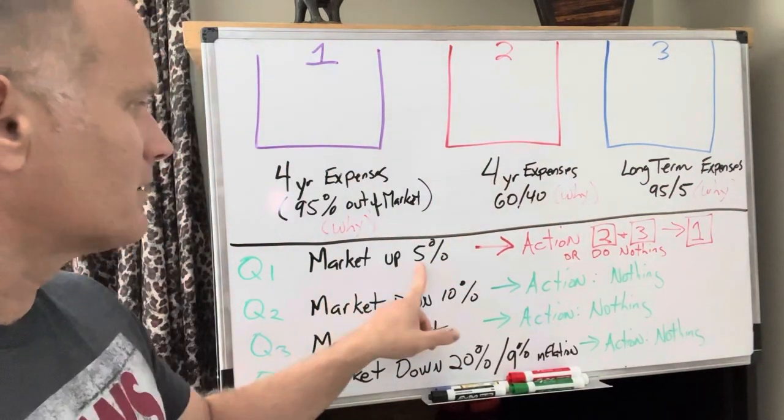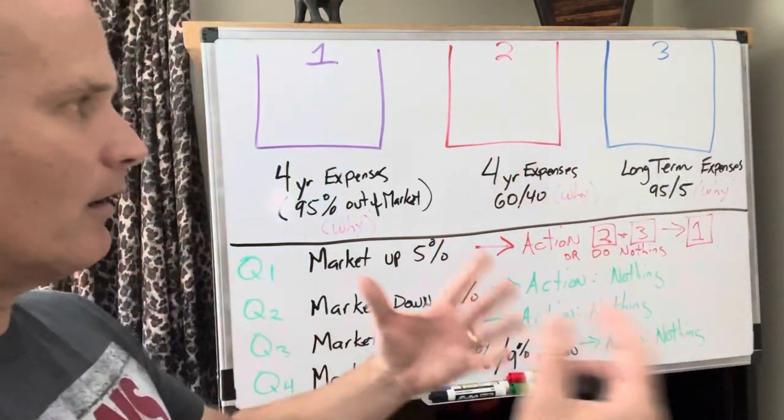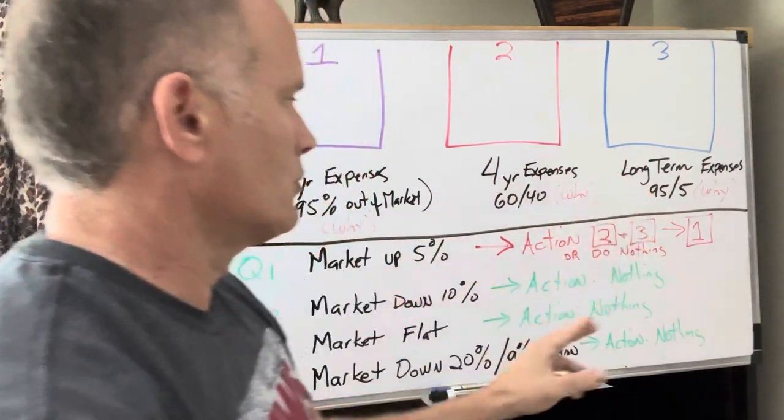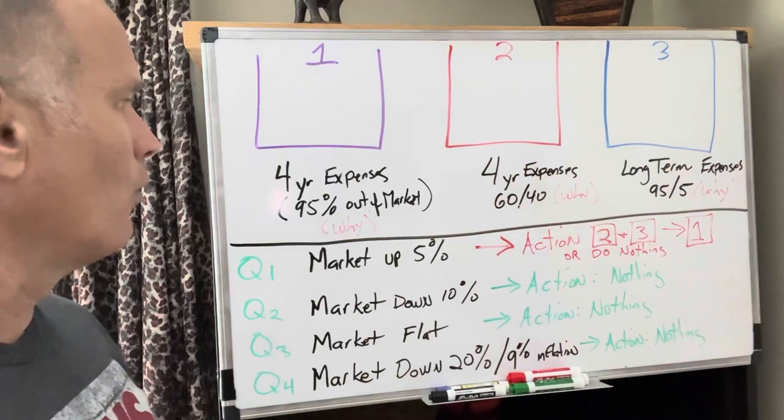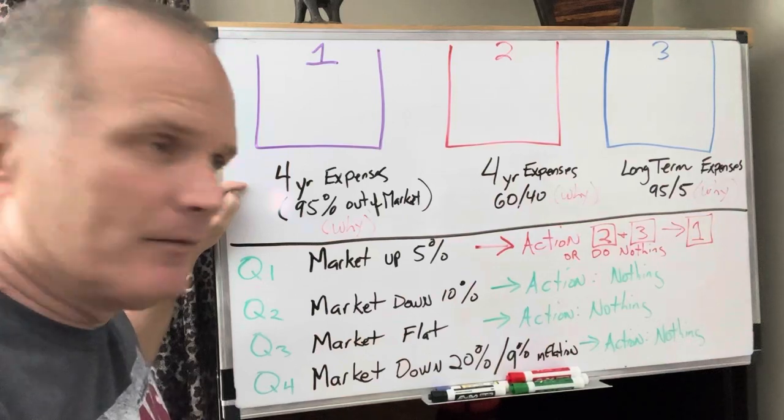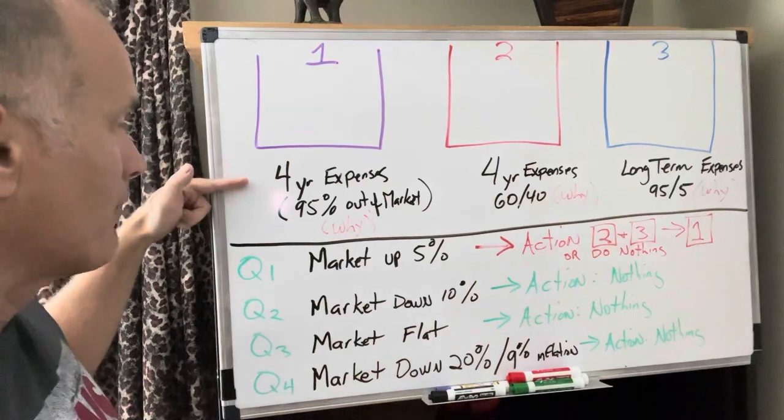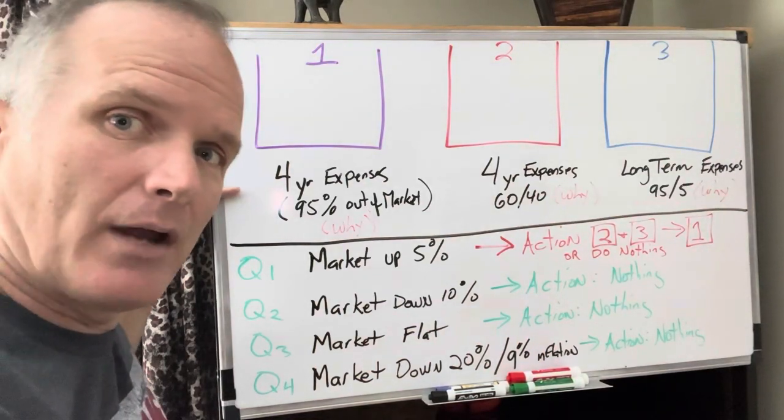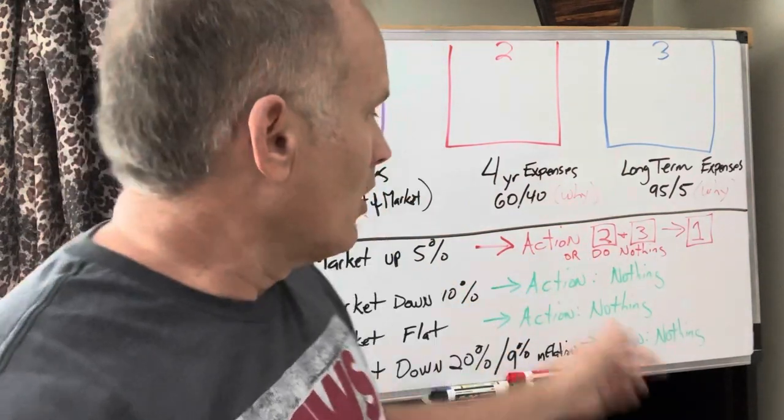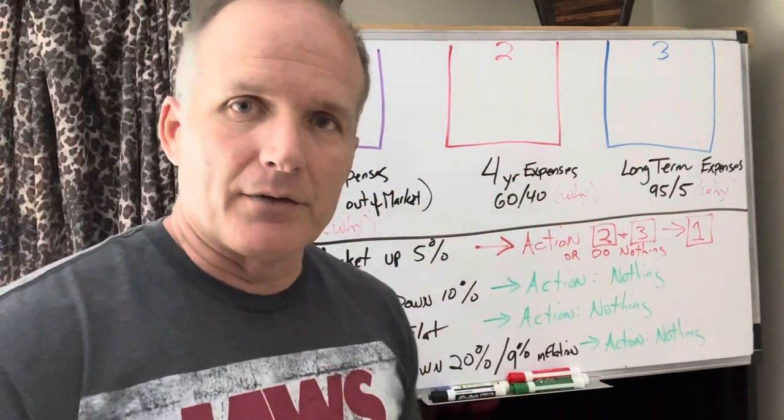And at the end of the first quarter, the market's up 5%. What I can do is I'll look at buckets two and three. Look at their values. Remember, this one's four years target. This kind of is a spillover. I can actually top off bucket one. So after the first quarter, this will be at three years and nine months. So you can top that off because remember, it's here to attack a bear. So that's what you can do with a 5% jump, or you can do nothing. Most likely, I'll tell you with 5%, that minimal jump, I'd probably do nothing, especially if this was at three years, nine months.